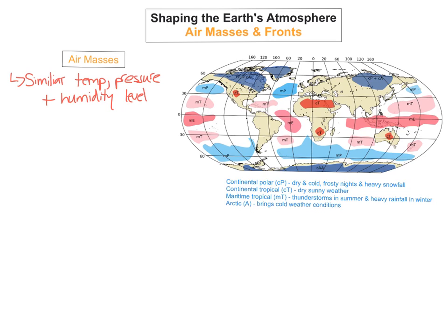The next thing we're going to look at is fronts. So what are fronts? Well a front is when one air mass meets another air mass, and the boundary between the two of them is called a front.